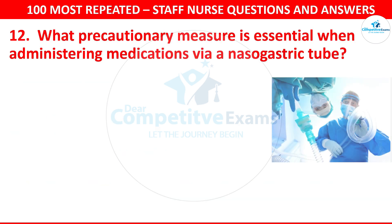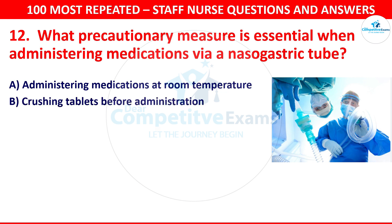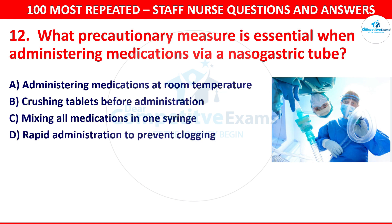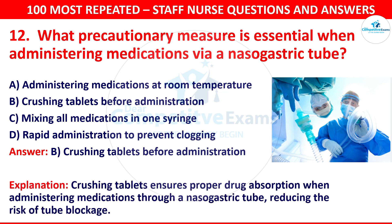Question 13. What precautionary measure is essential when administering medication via a nasogastric tube? Your options are administering medication at room temperature, crushing tablets before administration, mixing all medication in one syringe or rapid administration to prevent clogging. The correct answer is crushing tablets before administration. Crushing tablets ensures proper drug absorption when administering medication through a nasogastric tube and reduces the risk of tube blockage.